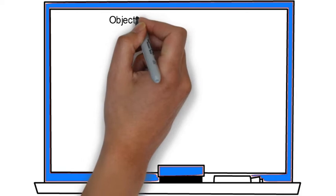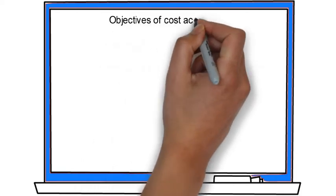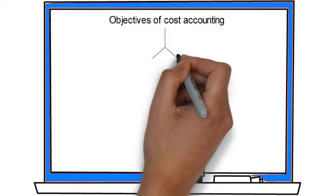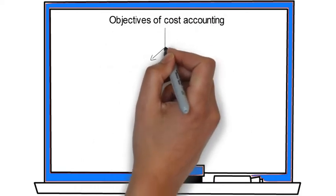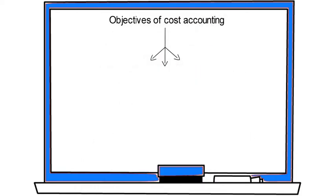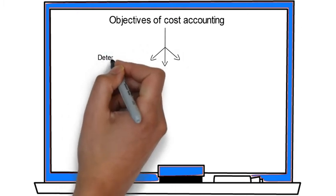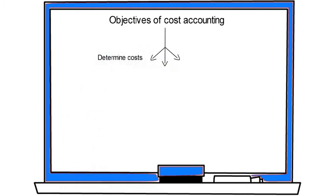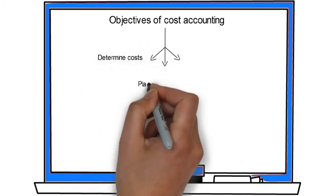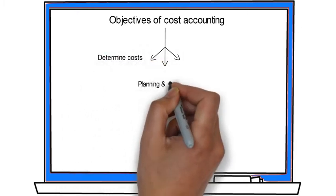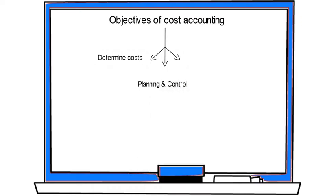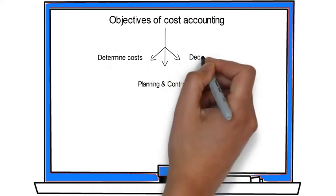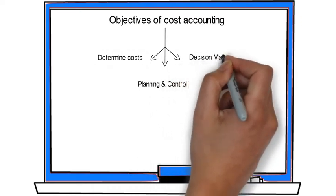There are three main objectives in cost accounting. First and foremost, to determine cost. Second, to planning and control. And lastly, for decision making.